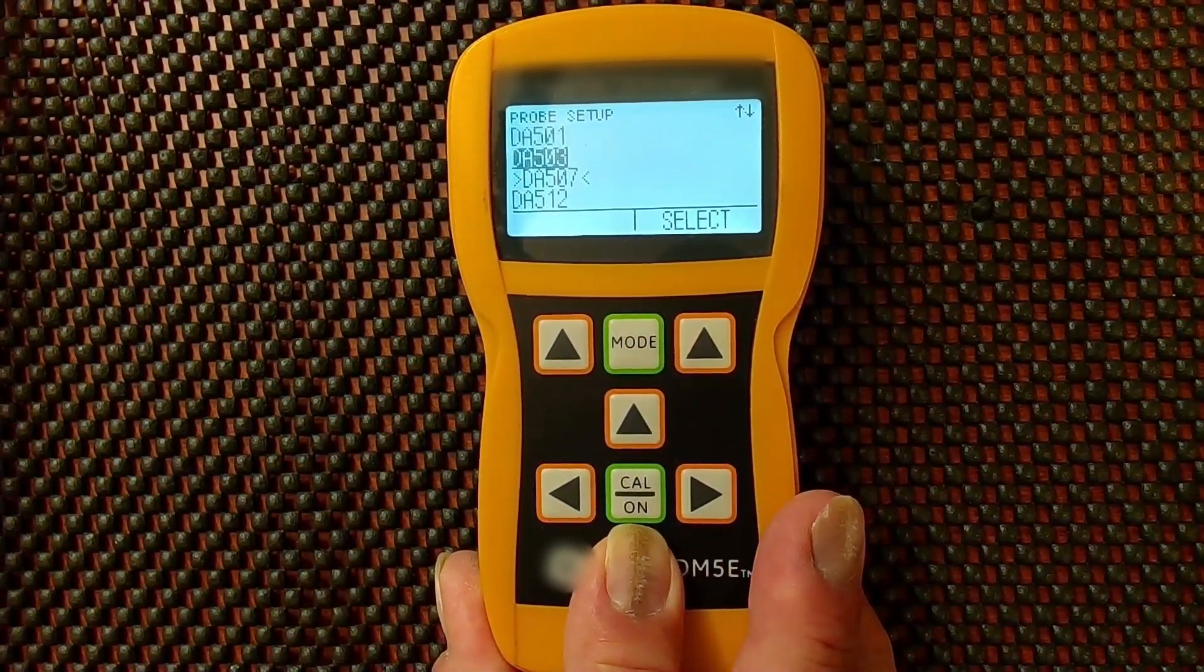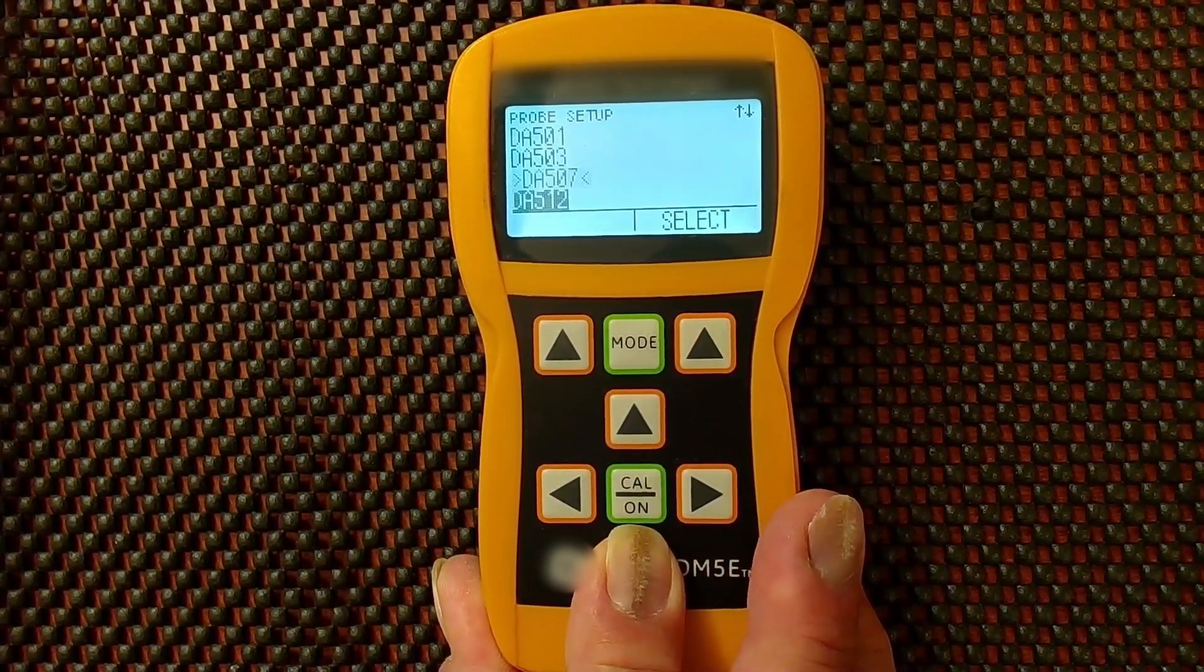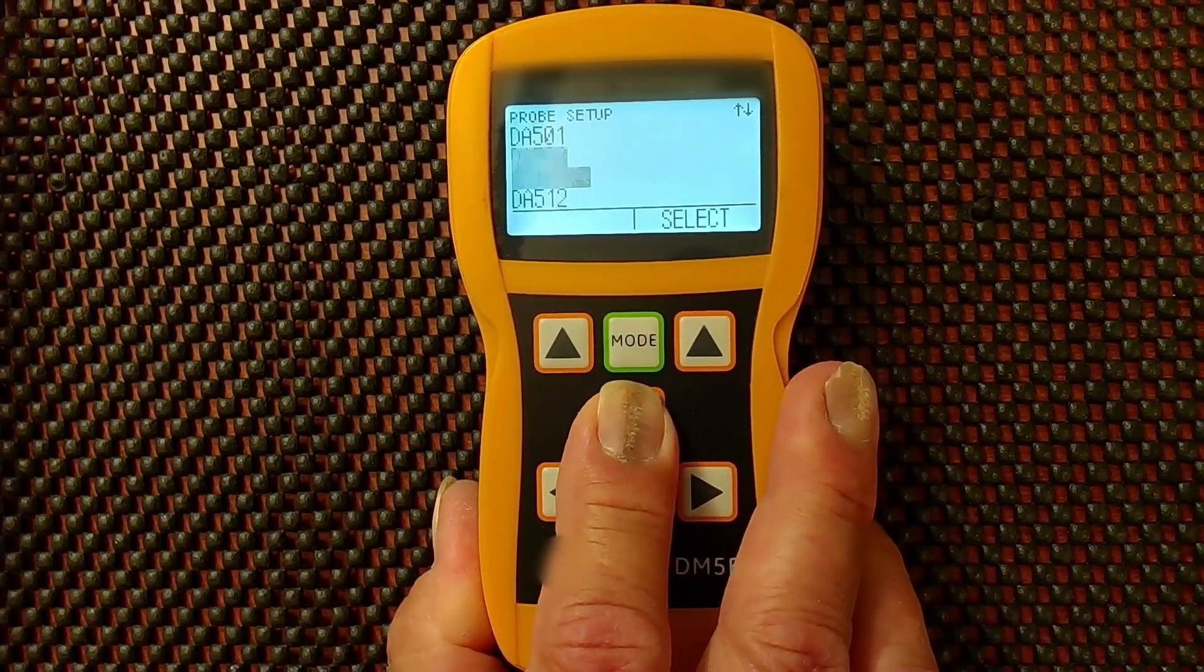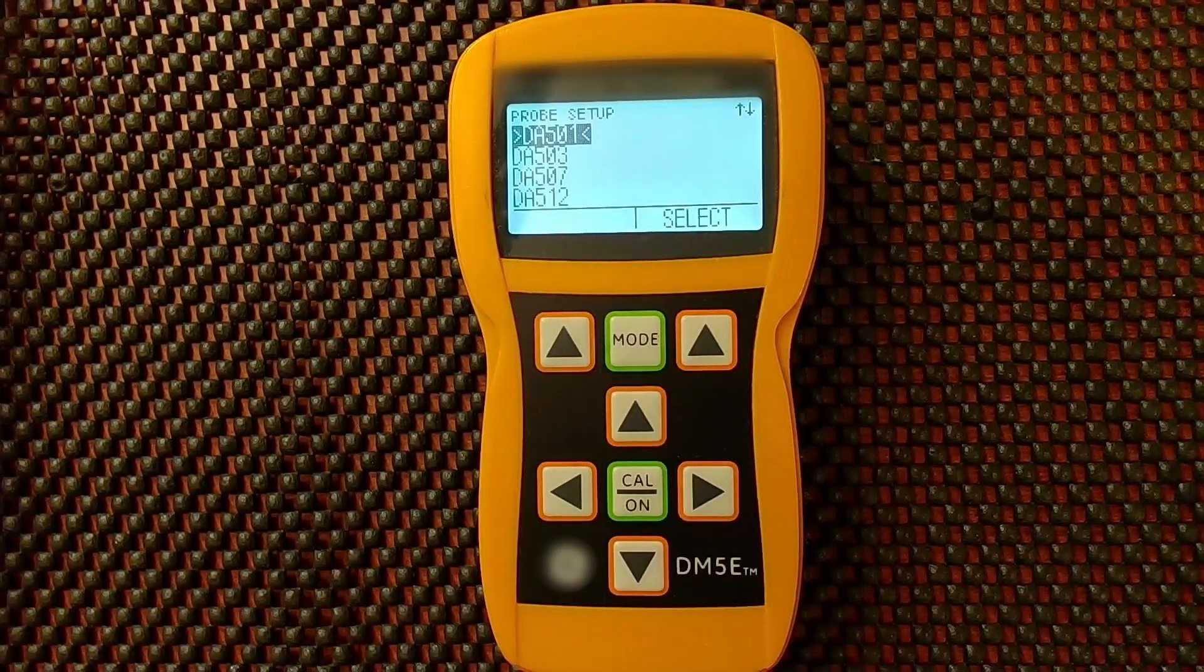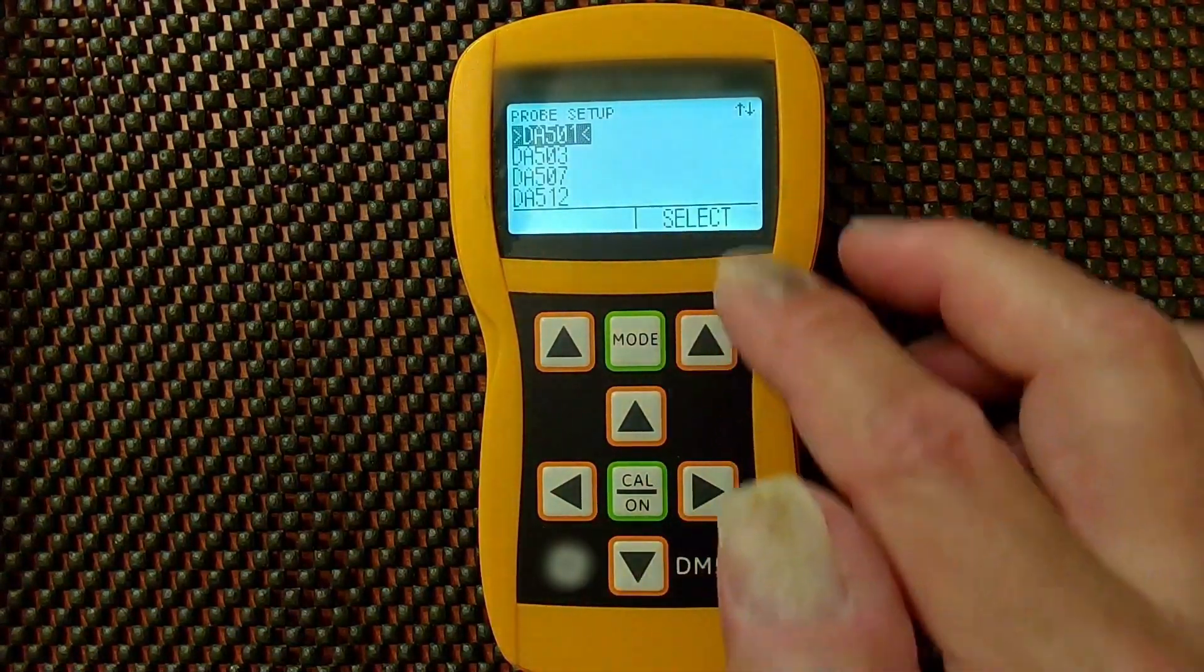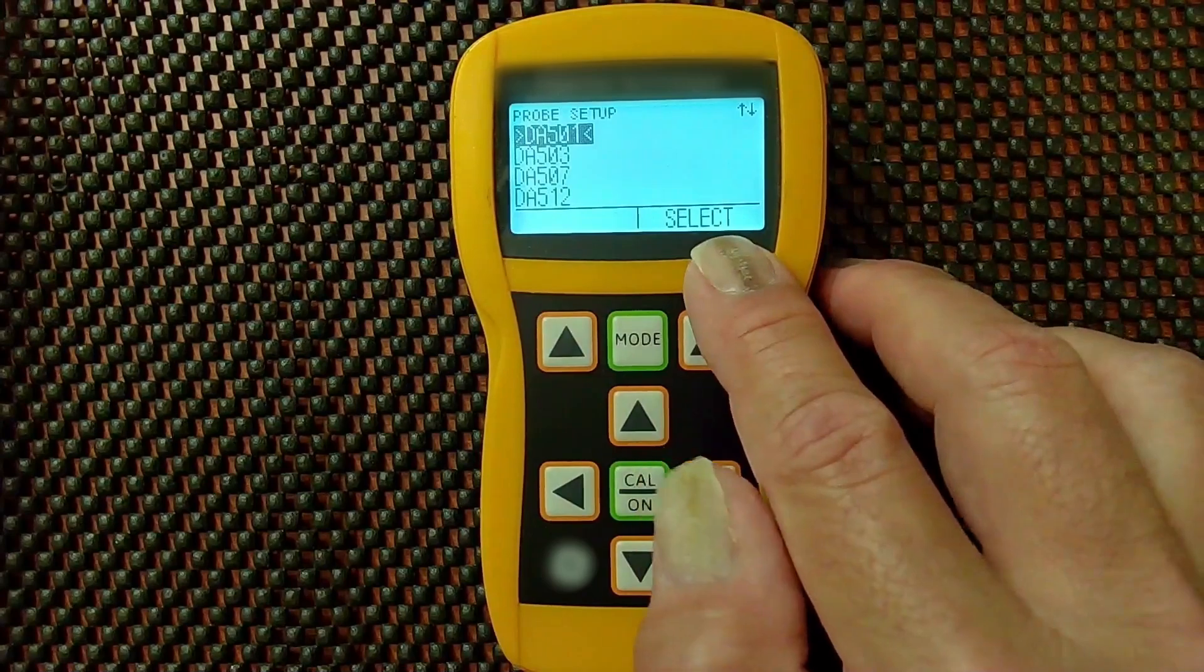So the inverted video is just the cursor as you move up and down. We're going to select the DA501 probe. Again, the selection key is a soft key underneath where it says select.